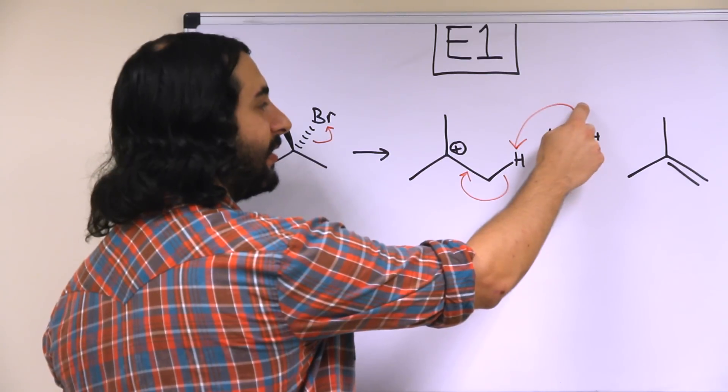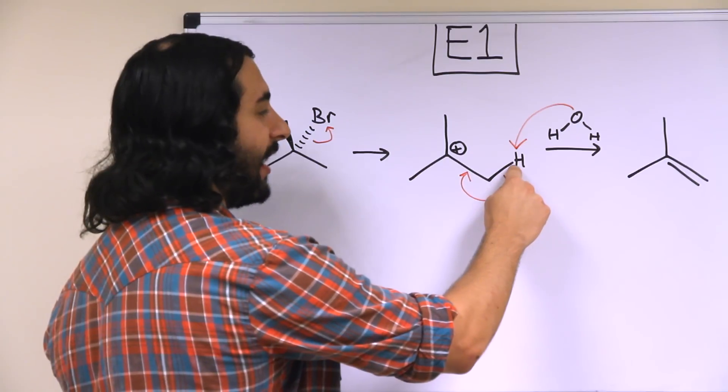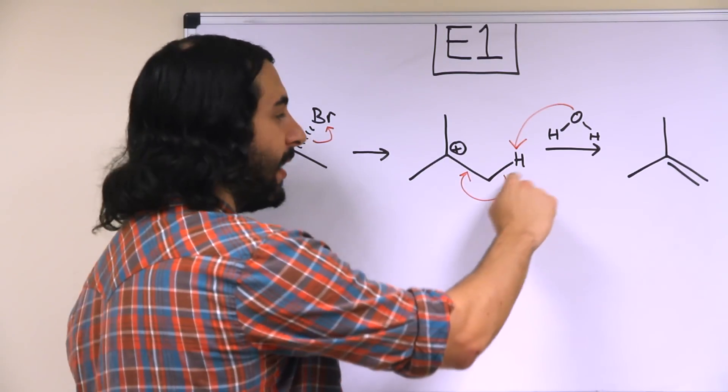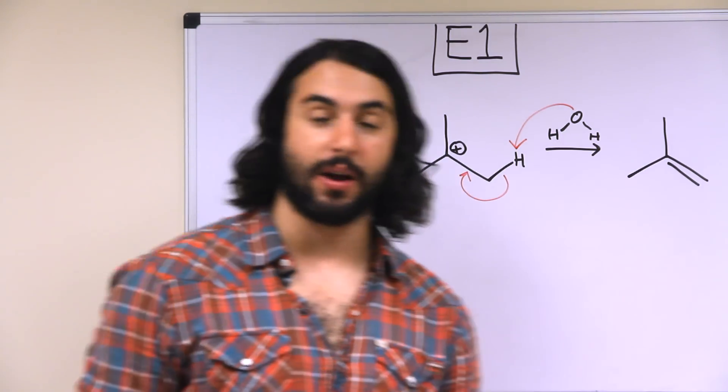So here is oxygen interacting with this proton, and then the electrons in this carbon-hydrogen bond are the ones that go to form the carbon-carbon pi bond in the product.